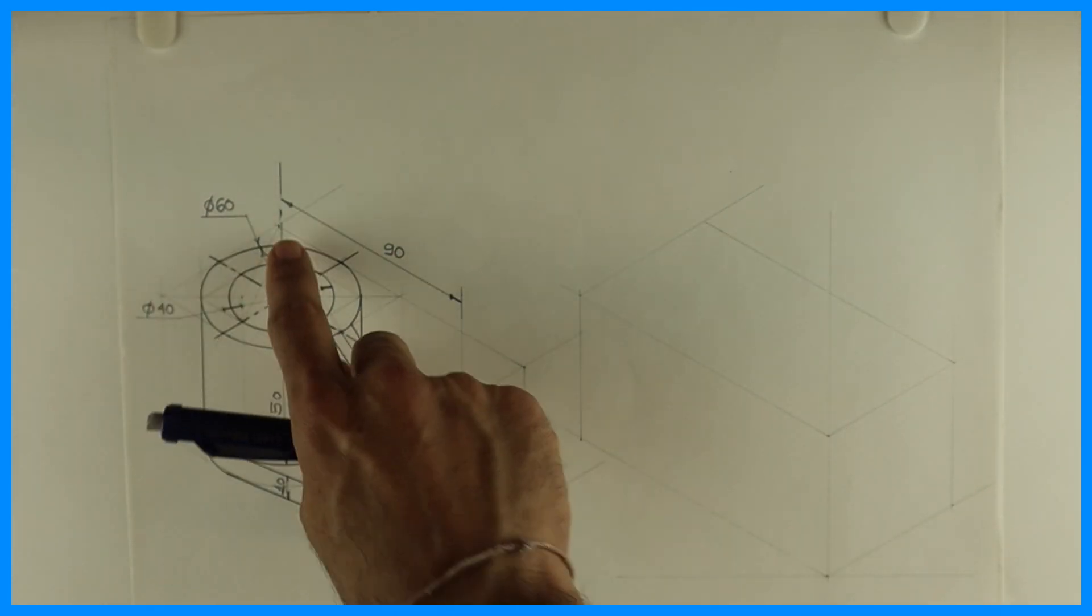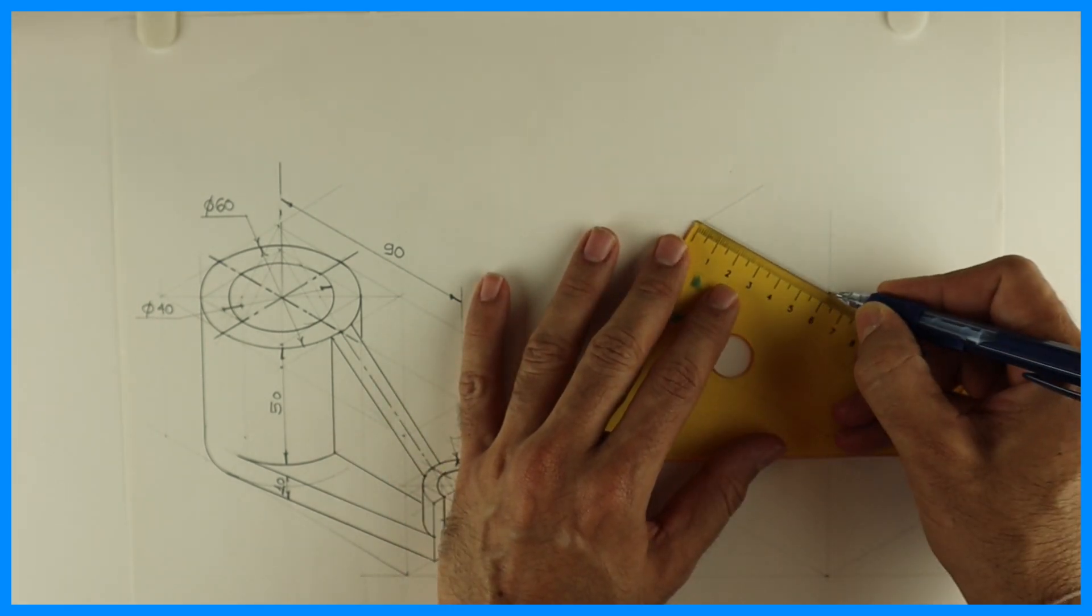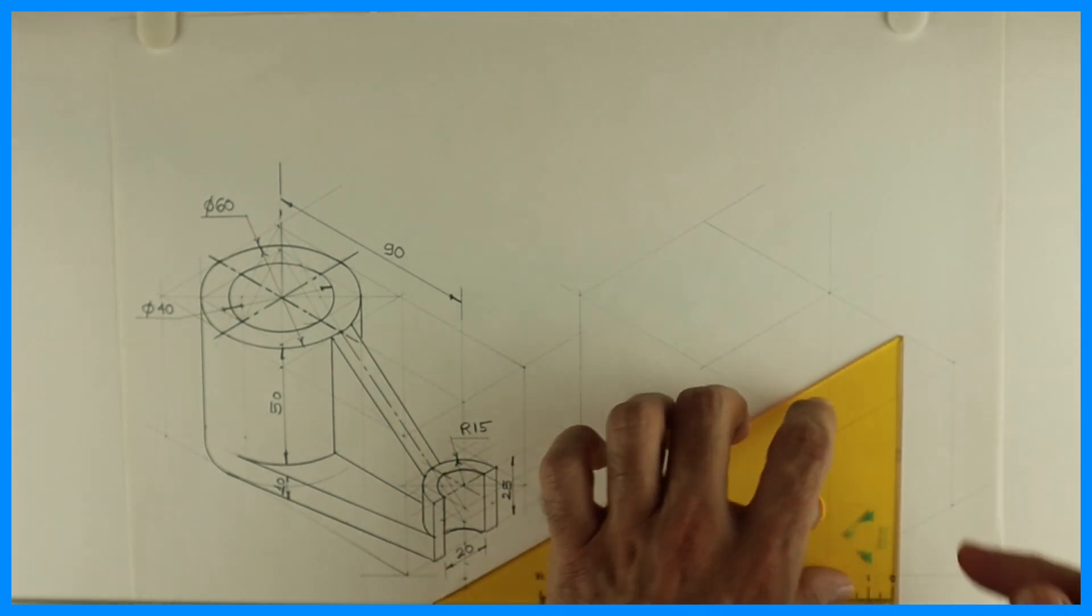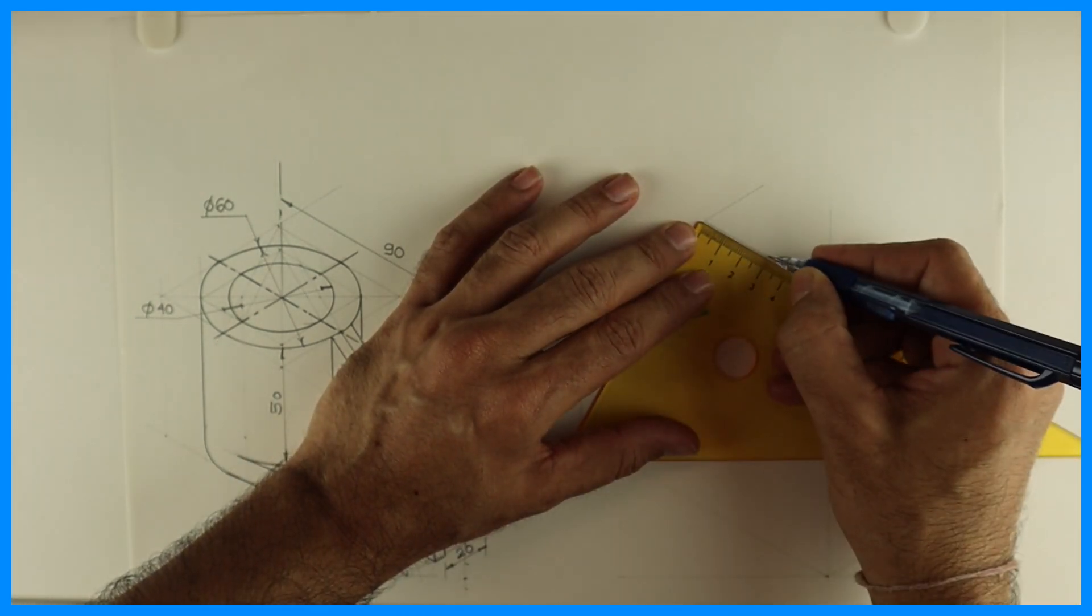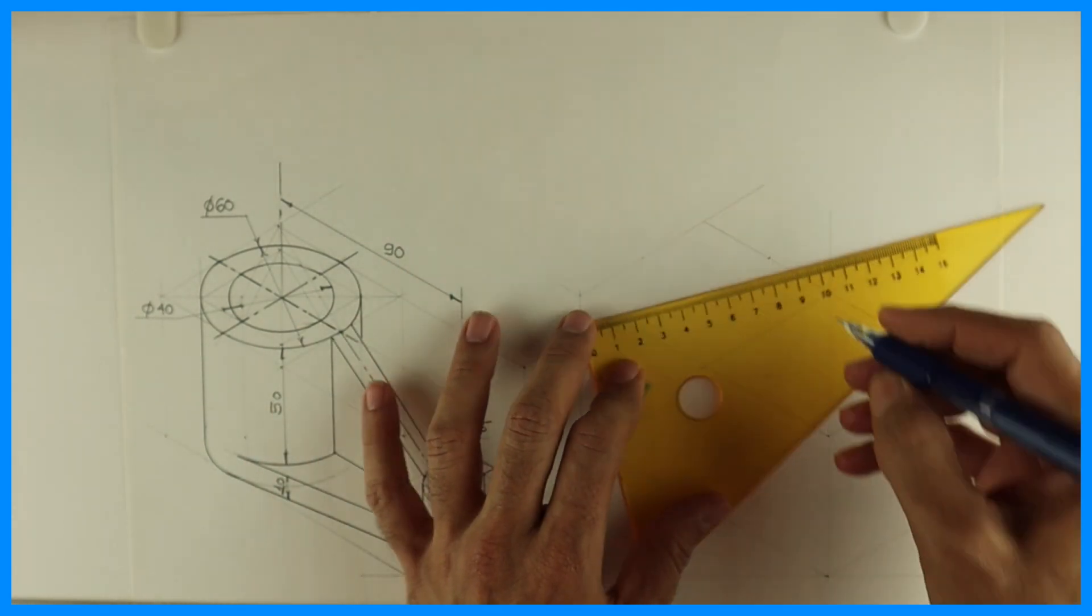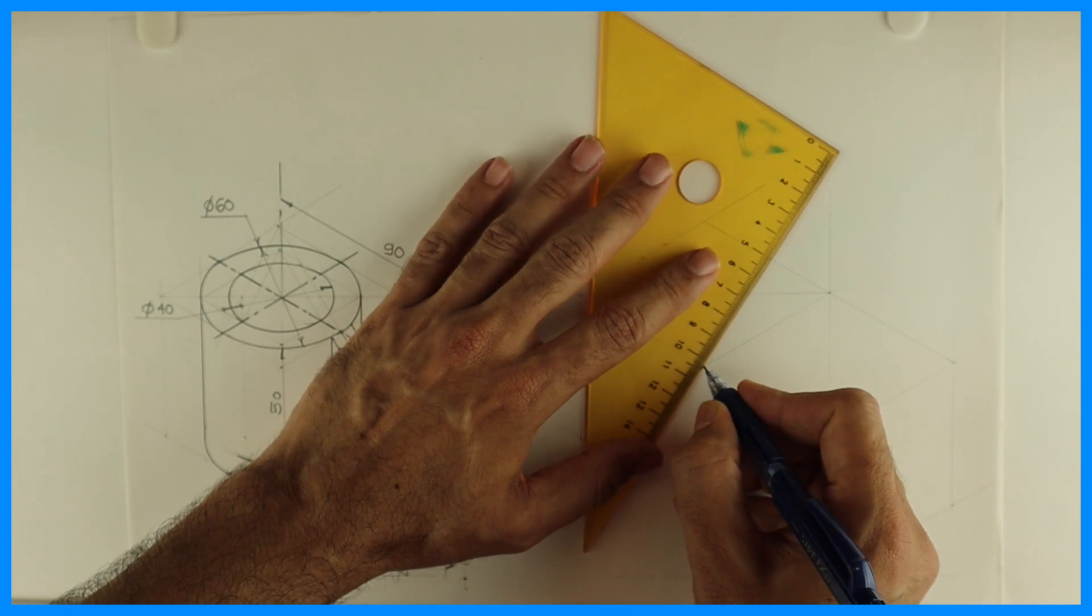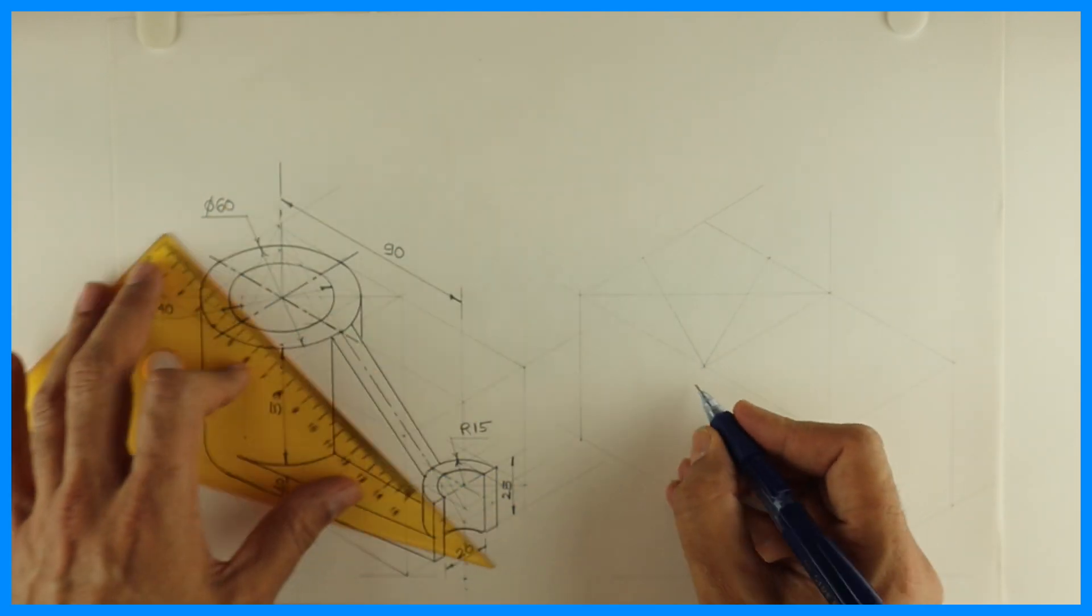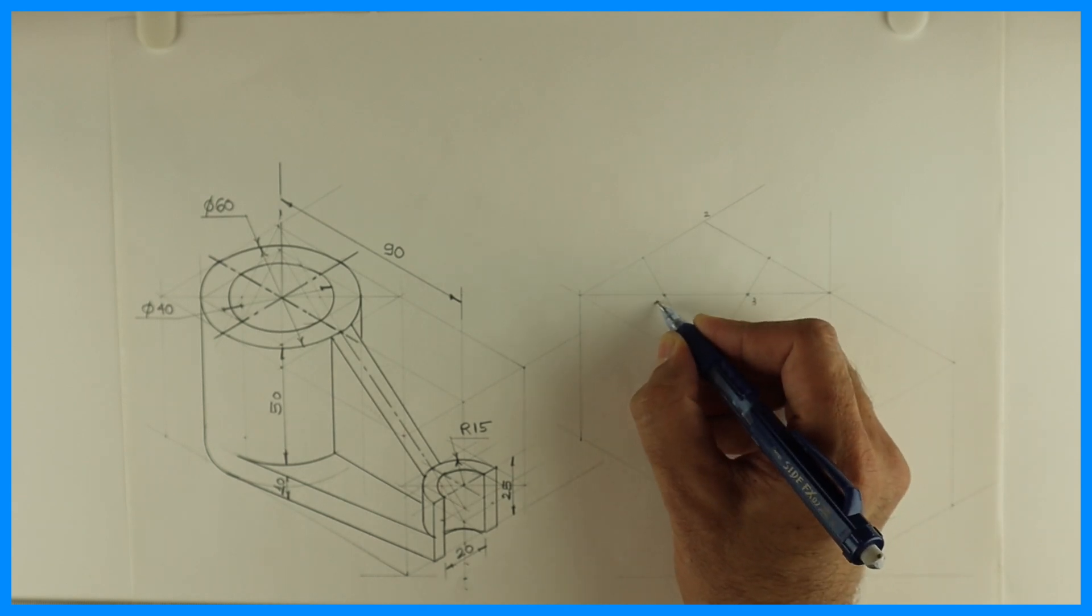This diameter is 60, so we'll take a 60 by 60 rhombus, then we use the four-center method. We will mark the midpoint on both sides. You can draw the longest diagonal, then from this corner you can join the opposite midpoint. This is point one, two, three, four.